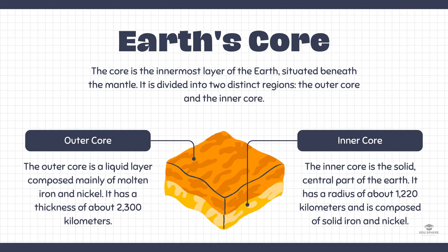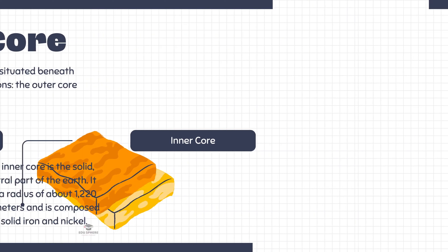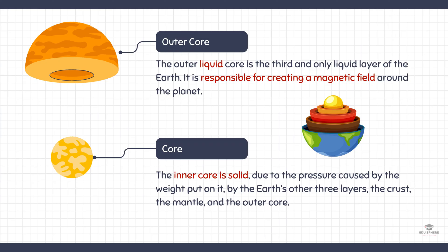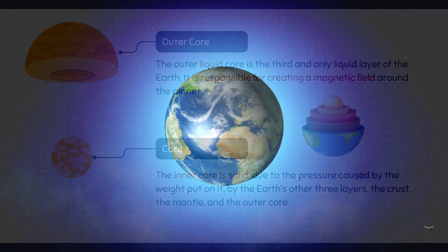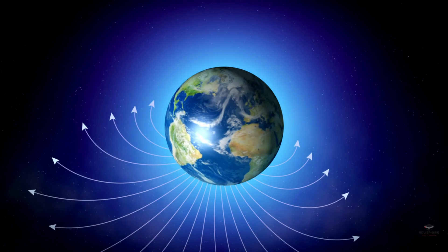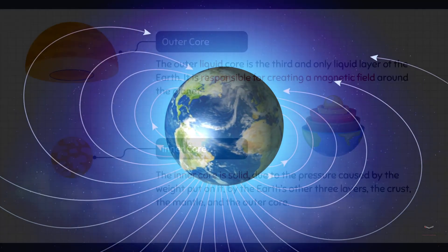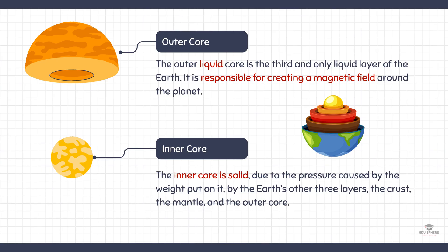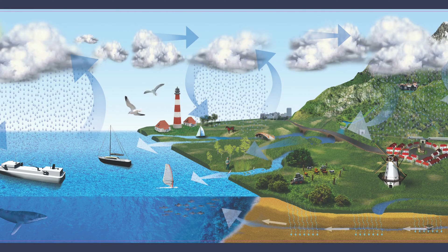Finally, the core is the innermost layer of the geosphere, and it's made up of two parts: the inner core and the outer core. The inner core is solid and it's made up of mostly iron and nickel. The outer liquid core is the third and only liquid layer of the Earth, and it is responsible for creating a magnetic field around the planet. The inner core is solid due to the pressure caused by the weight put on it by the Earth's other three layers: the crust, the mantle, and the outer core. The geosphere interacts with the other spheres of the Earth, including the hydrosphere, the atmosphere, and the biosphere. For example, the geosphere provides the water that evaporates into the atmosphere, and the atmosphere provides the oxygen that plants need to survive.